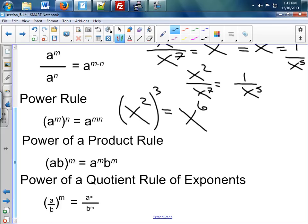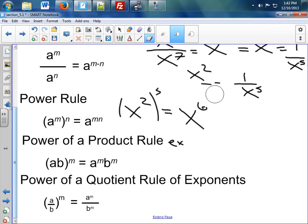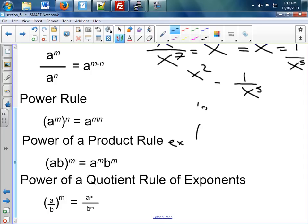This one, next one, Power of a Product Rule. People tend to get this one wrong and I'll give you an example why they get it wrong. I'm going to erase some stuff so I have some room. So my example here would be 2x to the 3rd squared. Most people will give me an answer of 2x to the 6th. That is incorrect.